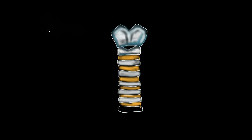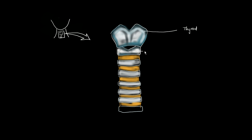This is a picture of the trachea and the larynx. In the neck, we have the thyroid cartilage, and below that we have the cricoid and the tracheal rings. Below the thyroid cartilage, we have another cartilage of the larynx — the cricoid cartilage, which is a ring-shaped cartilage. Then here we have the tracheal cartilage rings.